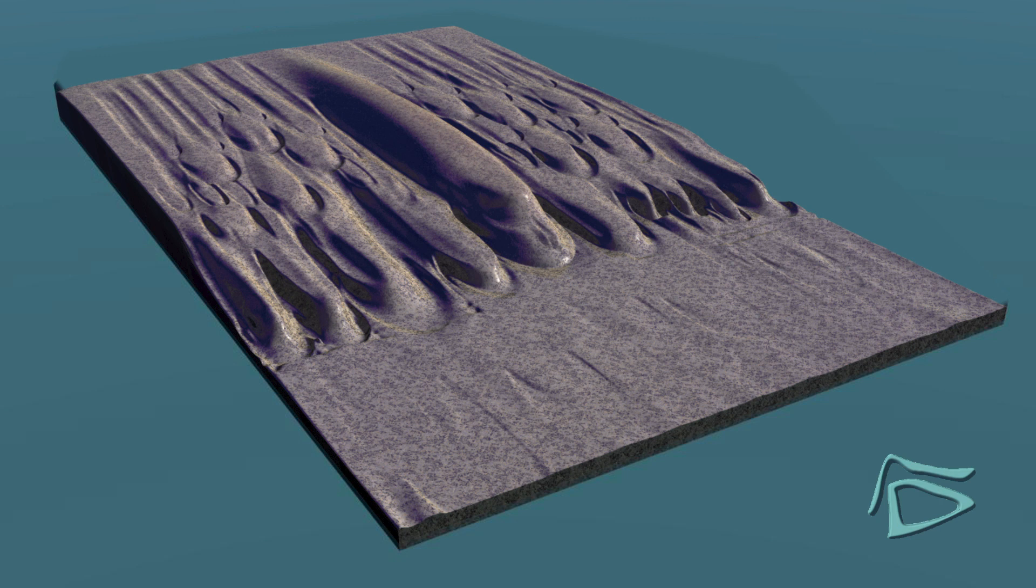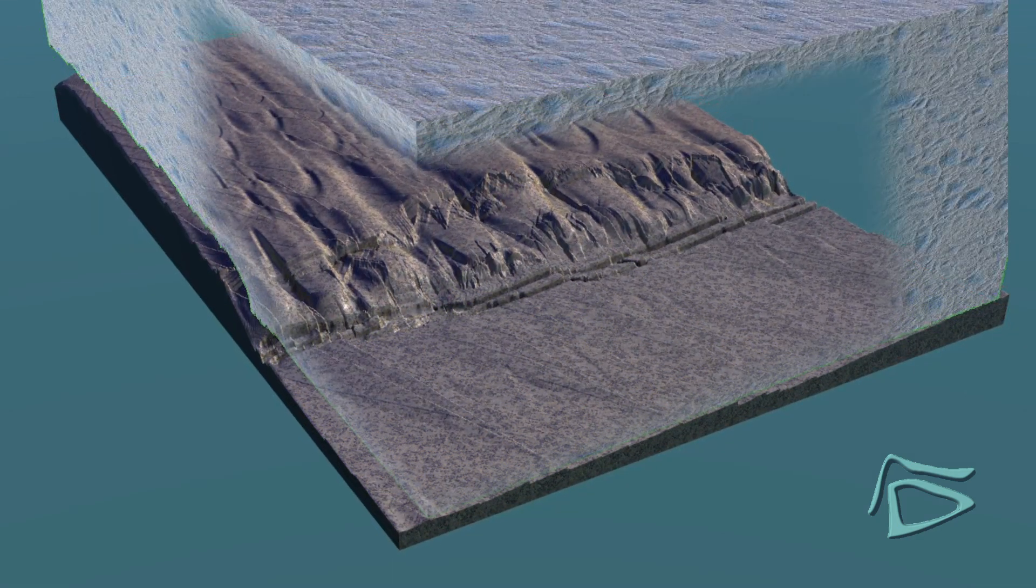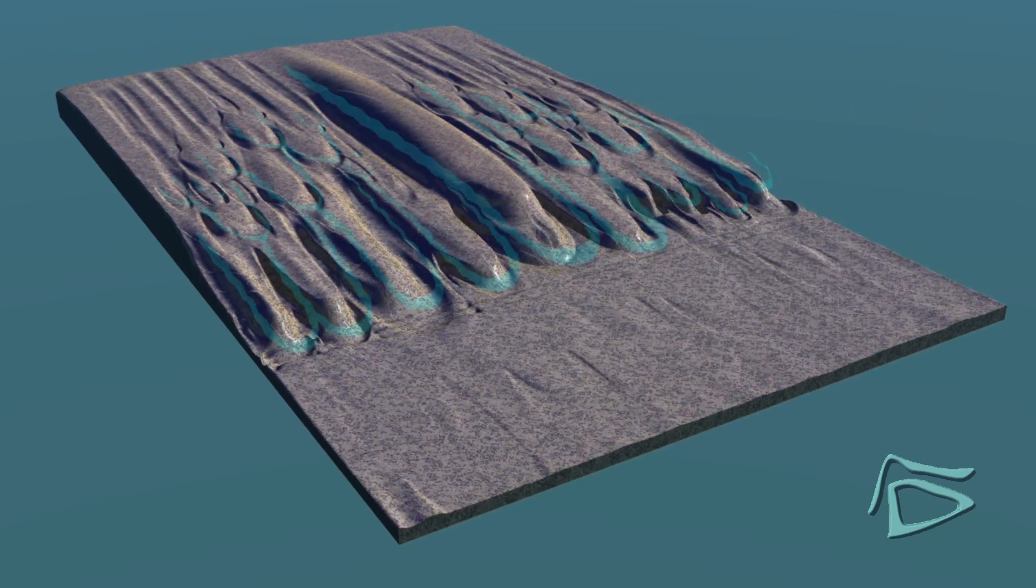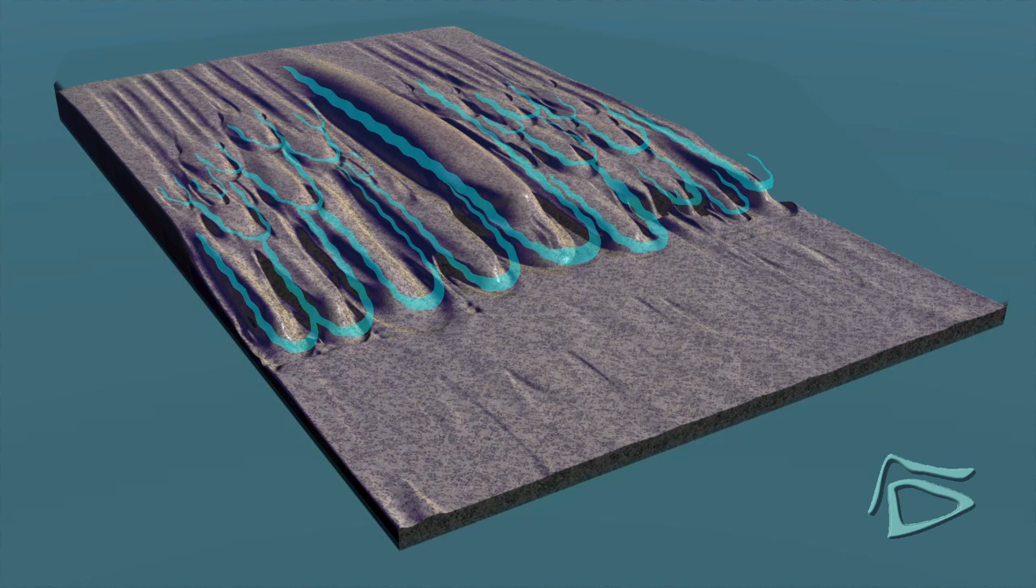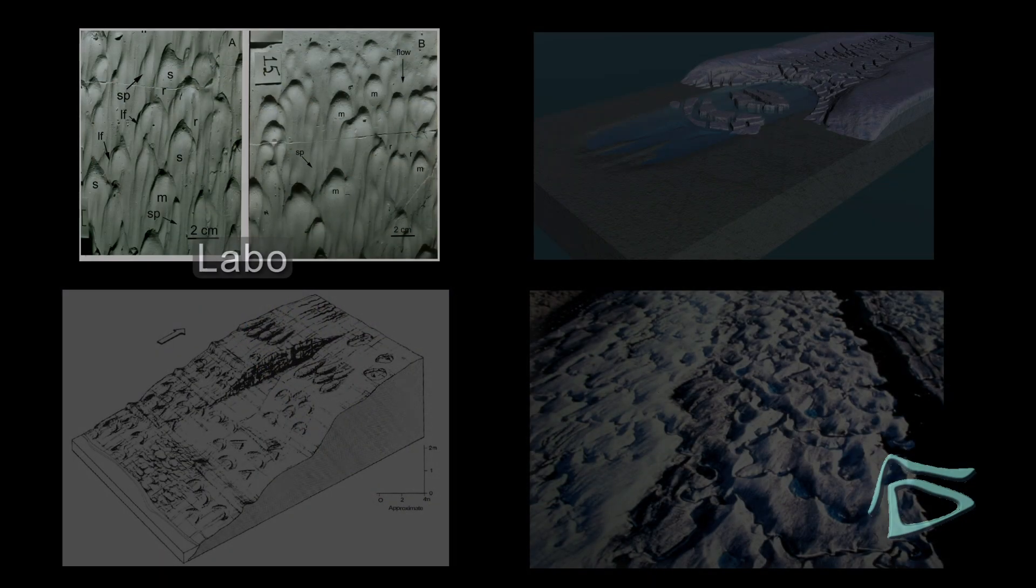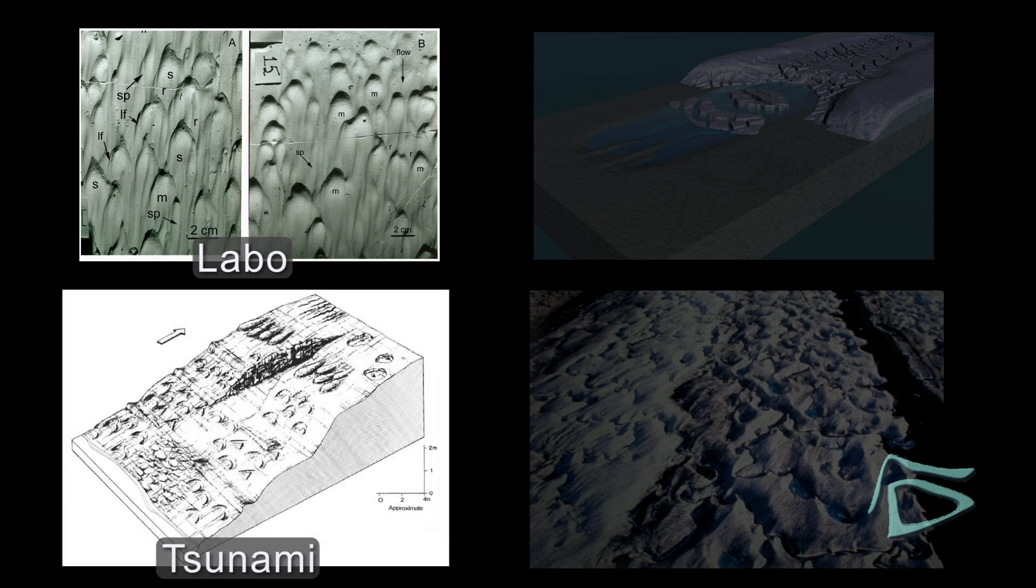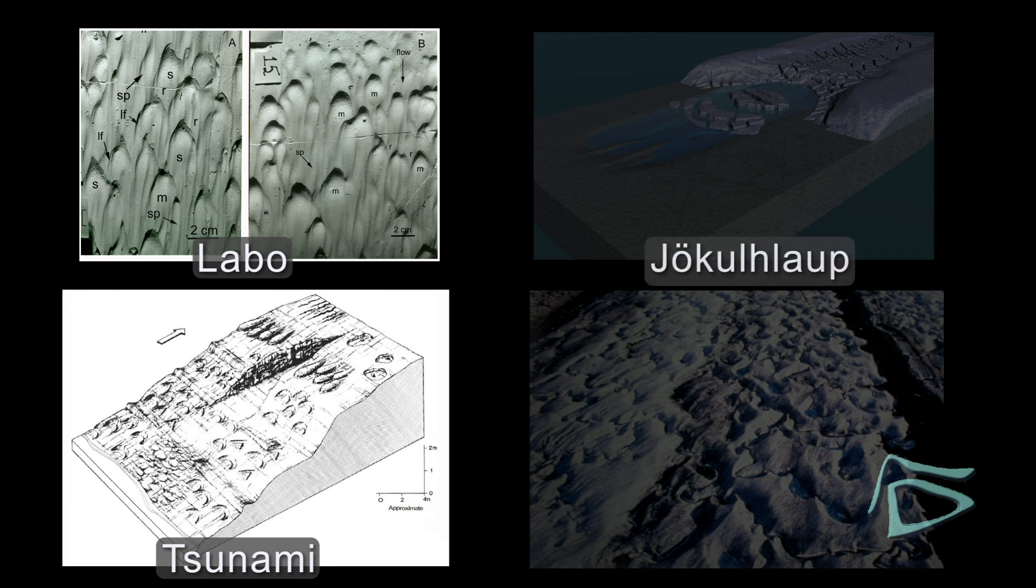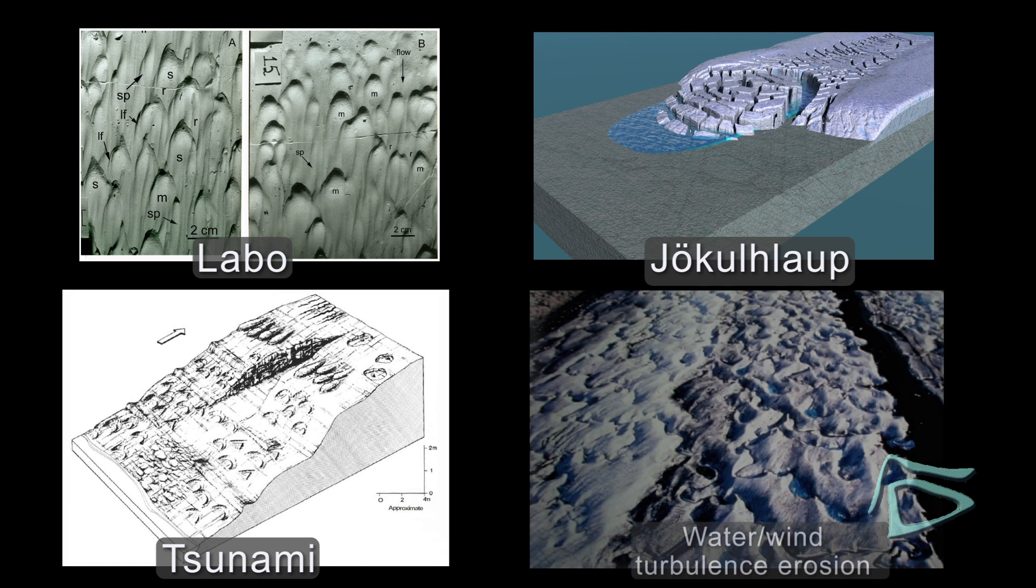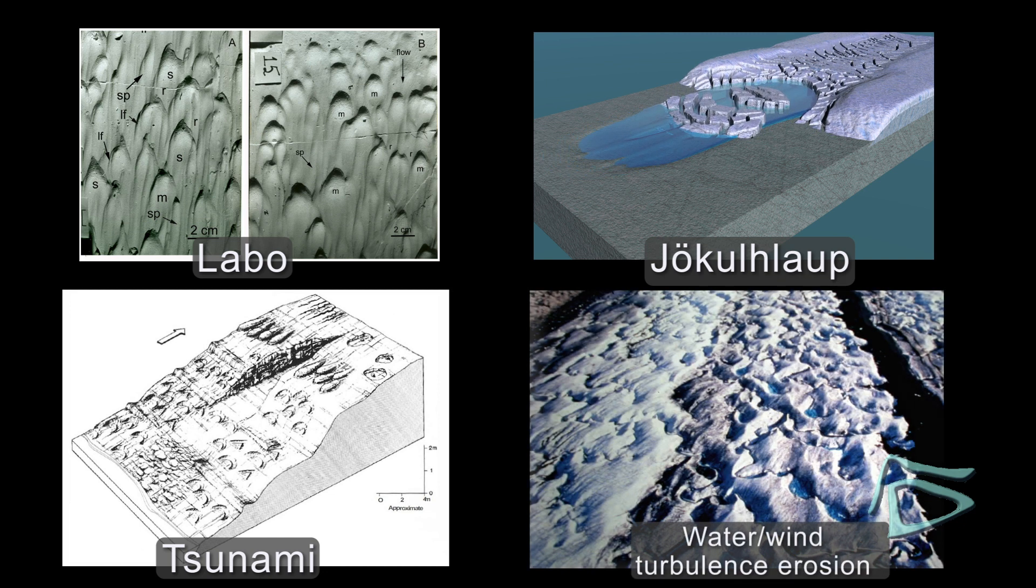Field study is consistent with one main sculpting event across French River terrain. This singularity supports the subglacial flood model. Four settings support this model: identical S-forms produced in flume laboratory, S-forms sculpted by tsunamis, also sculpted by jökulhlaup, S-forms sculpted in turbulent flow in water or wind.